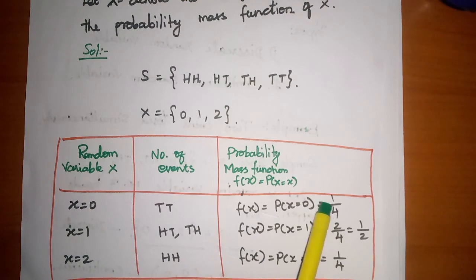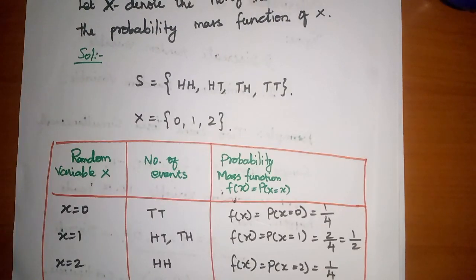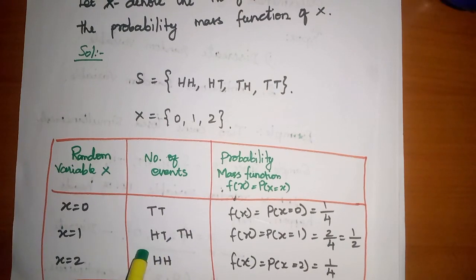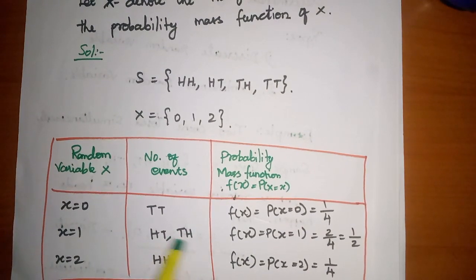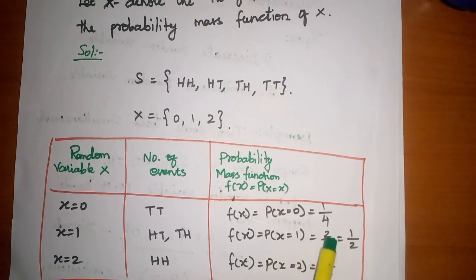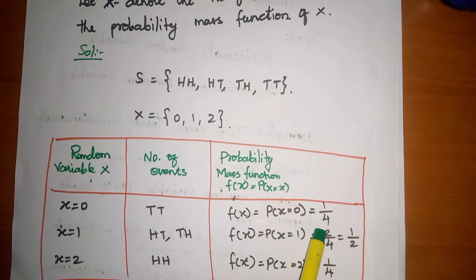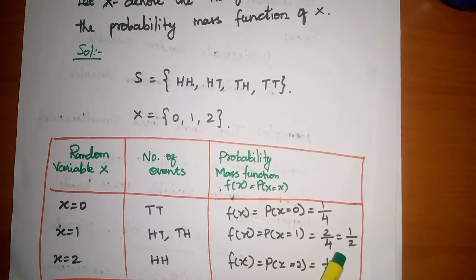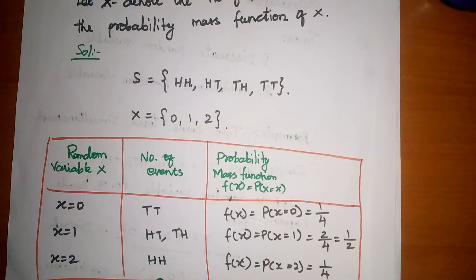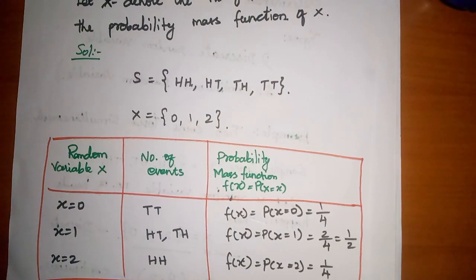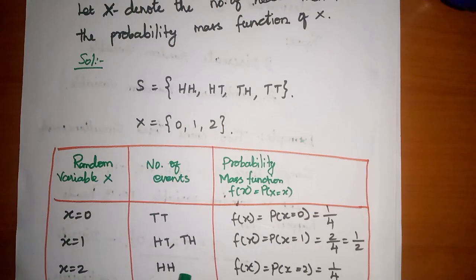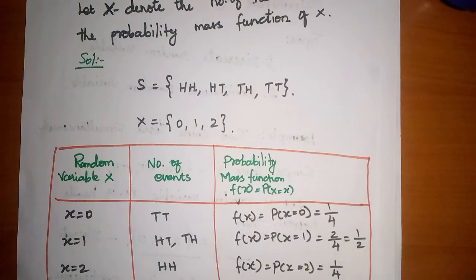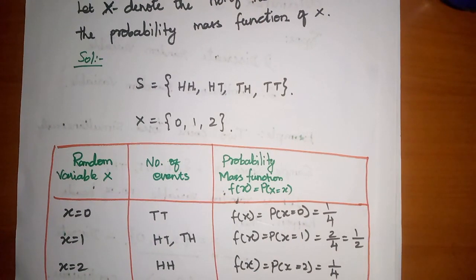When x equals 1, there are 2 events with exactly 1 head out of 4 total events, so p(x=1) = 2/4. When x equals 2, there is 1 event with 2 heads out of 4 total events, so p(x=2) = 1/4. This completes the probability mass function table for the discrete random variable.